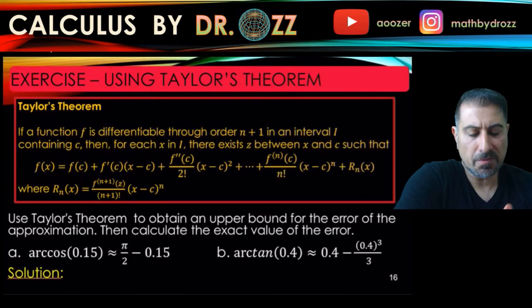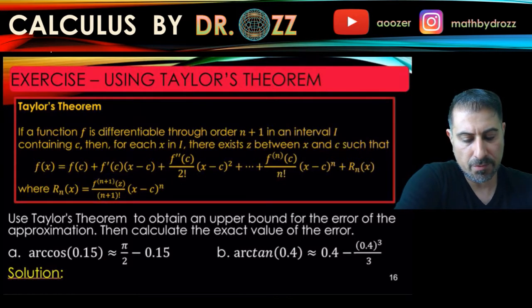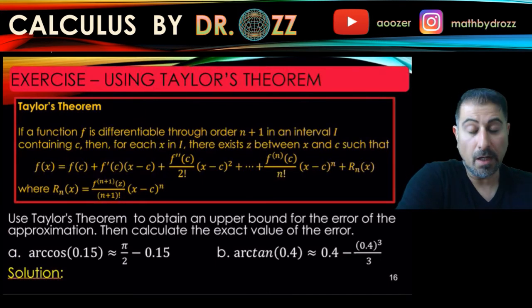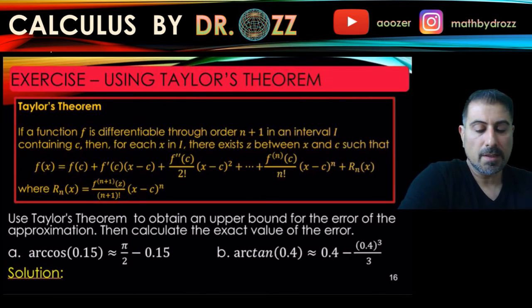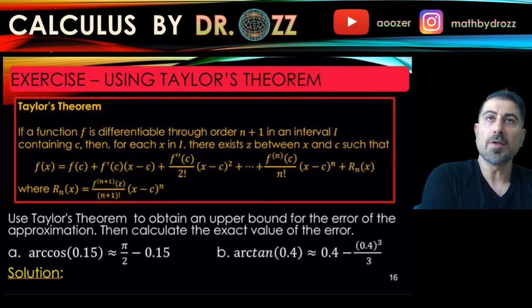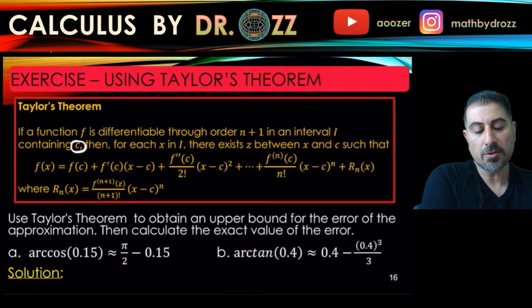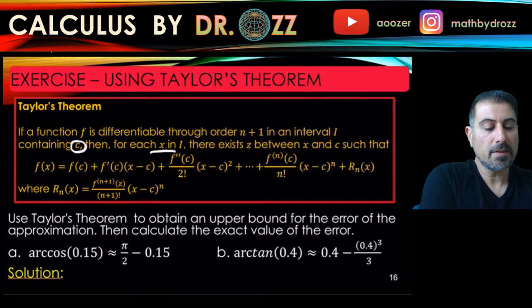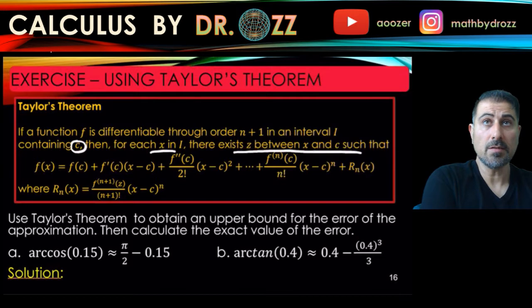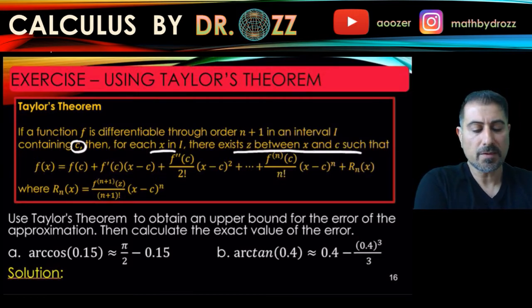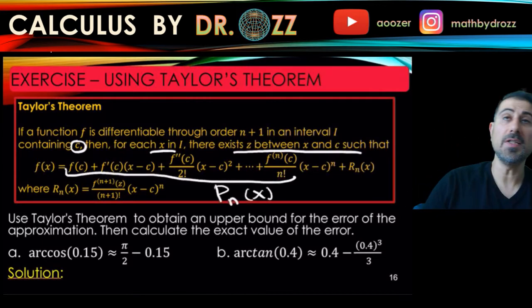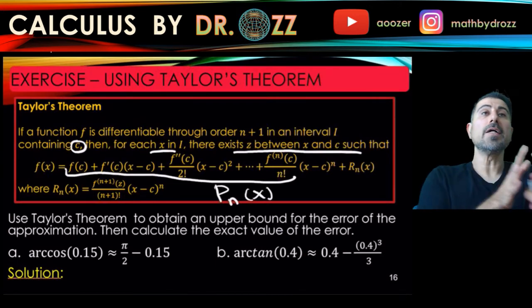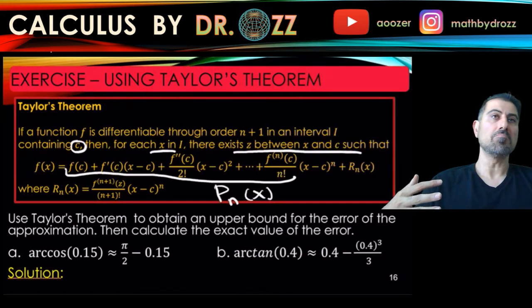Alright, let's revisit the Taylor theorem. But before doing that, these are approximations of the values of arccos and arctan. In particular, arccos(0.15) is approximated by its Taylor polynomial and same as arctan(0.4). So let's look at the Taylor's theorem carefully. We have a differentiable function through the order n plus 1 in an interval I containing the point C. So this is the expansion of f at point C. Then for each x in I, there exists a z between x and C, such that f(x) is exactly equal to the Taylor polynomial of order n, which is P_n(x) in our notation, and all the leftover terms.